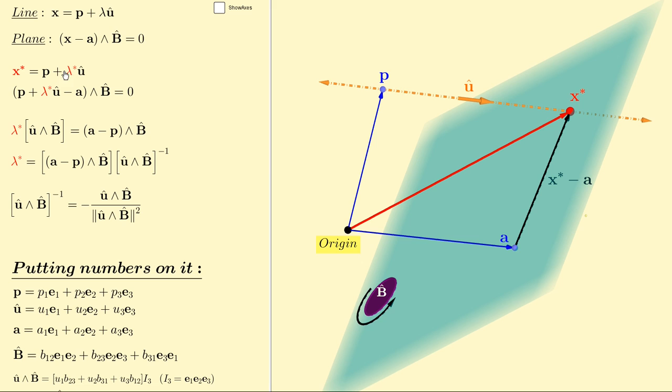In the problem at hand here, where we want to find the point of intersection, the vector from the origin to that point of intersection is equal to the vector p plus some specific value, lambda star, times the unit vector u hat.